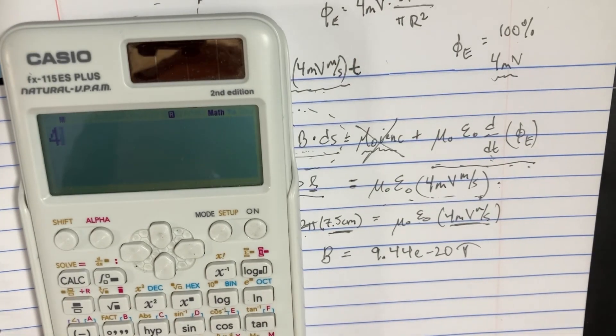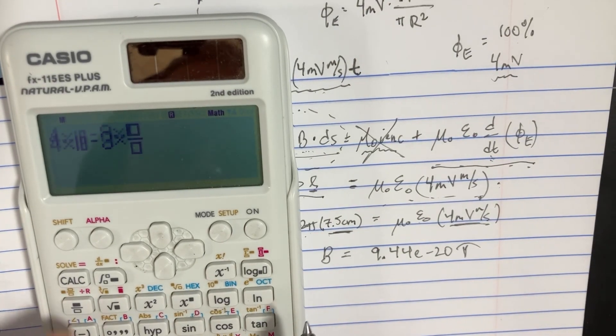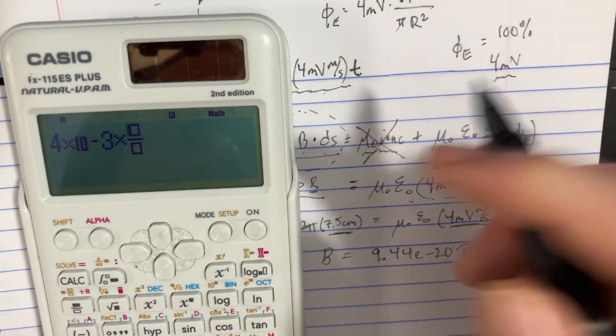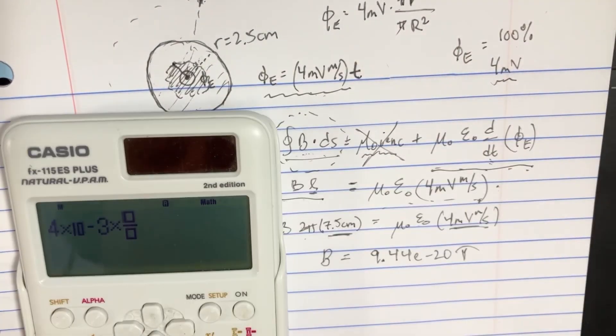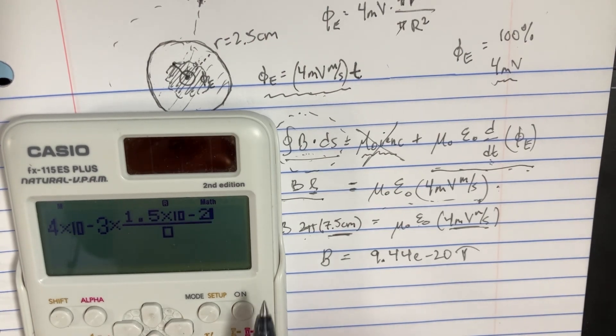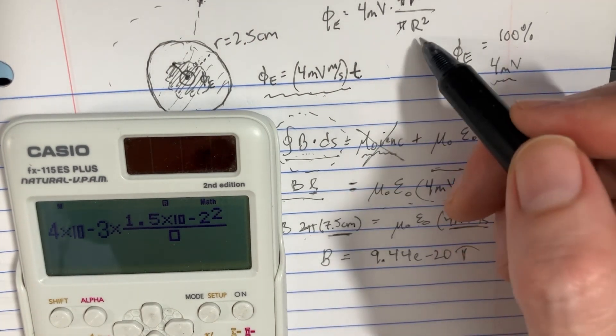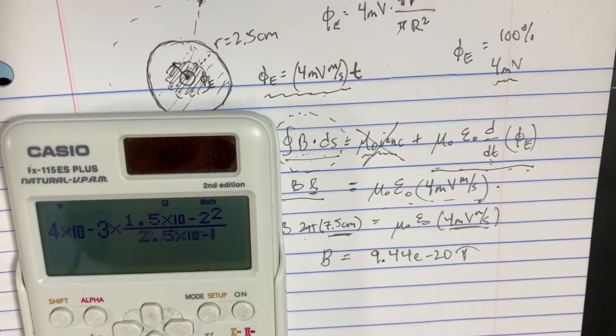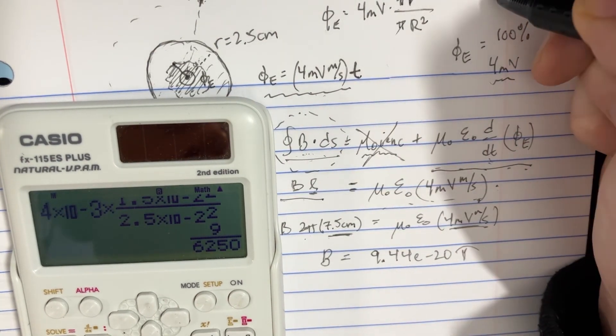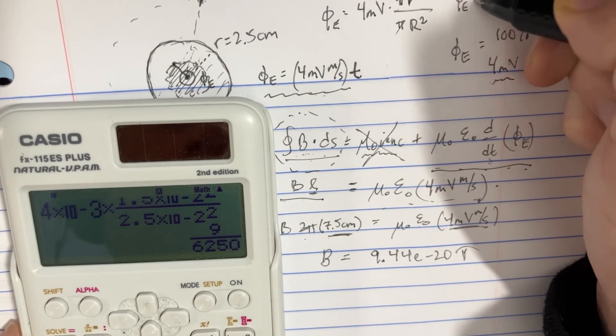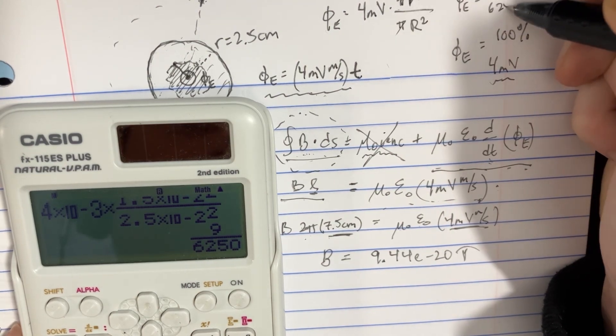So in order to solve that, we'll basically just say 4 millivolts times, and we're going to get rid of these pi's. But the top side is going to be the smaller r, which is 1.5 times 10 to the negative 2 squared. And on the bottom, we have 2.5 times 10 to the negative 2 squared. So that way, the partial flux that we have is really more like 9 over 6.25.